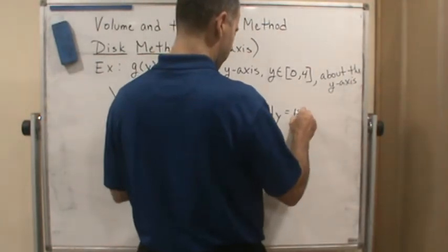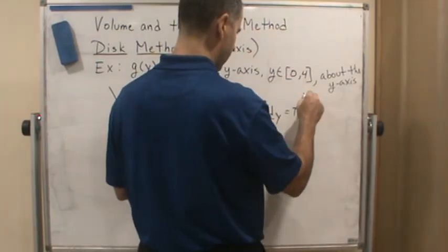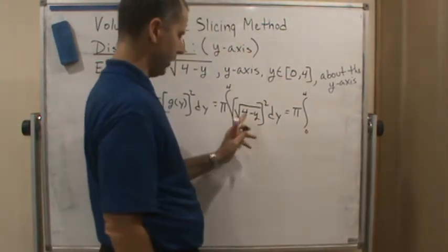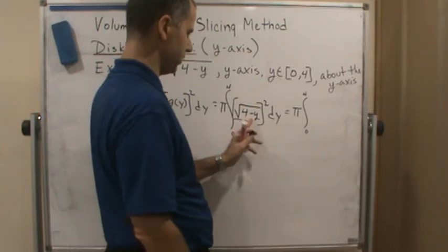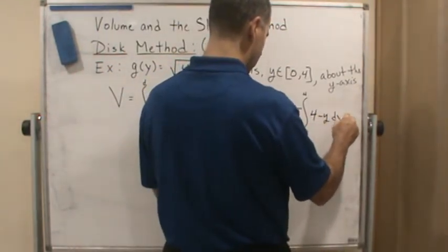So this is going to become pi. Now this is going to become simplified because the square root and the square cancel each other out. So this is just going to become 4 minus y dy.